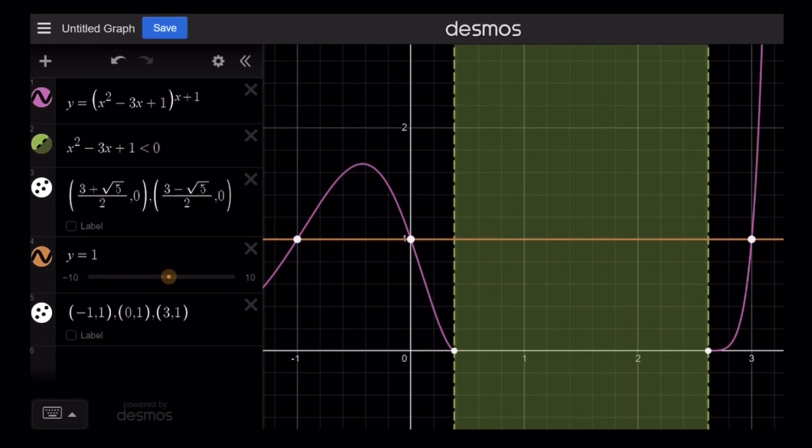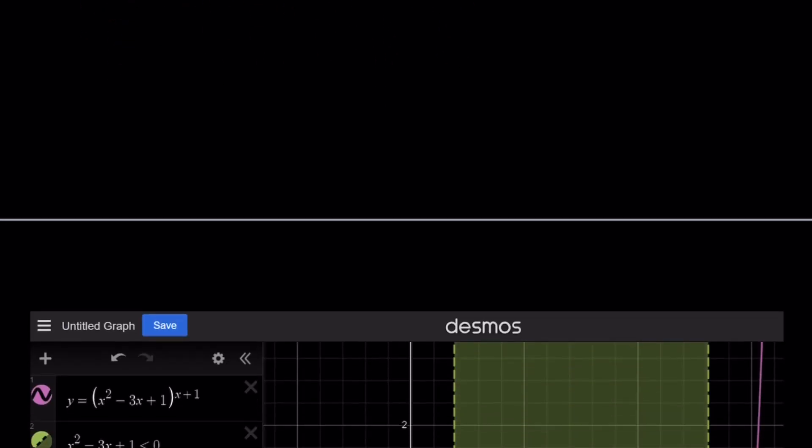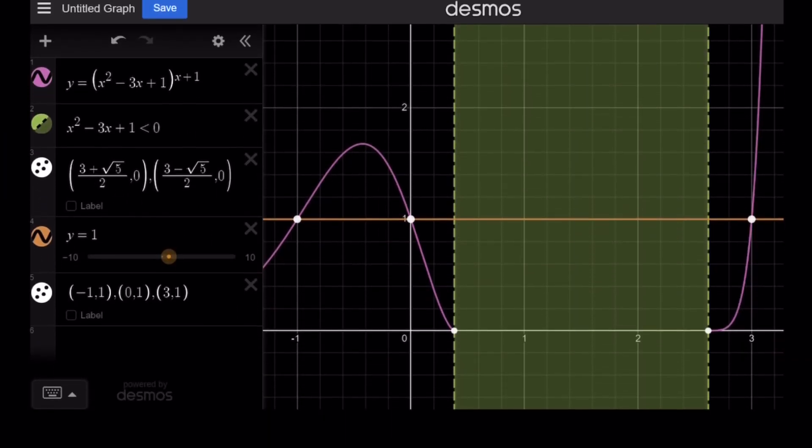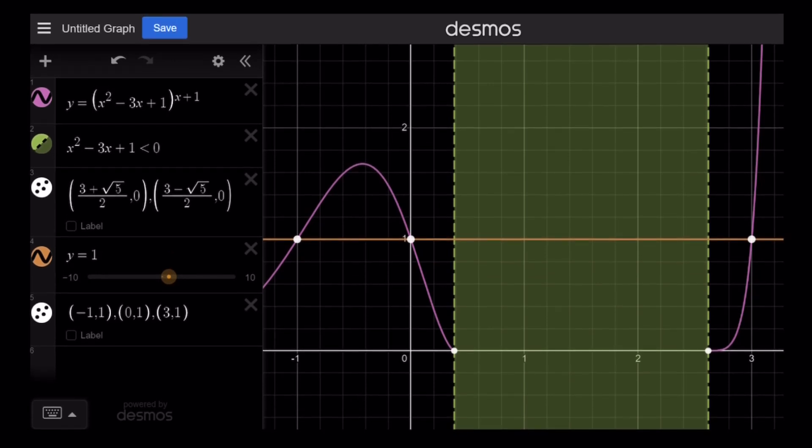The graph of x squared minus 3x plus 1 to the power of x plus 1. I also graphed the inequality for you where the base is negative. So on this interval, the shaded region, our base is going to be negative and our function is going to be not well defined. Therefore we don't seem to have any solutions in that region, but we have an integer solution, which is what we just found. That's why we don't see all the solutions. We only see three solutions because one of them makes the base negative and it's not represented by the graph.